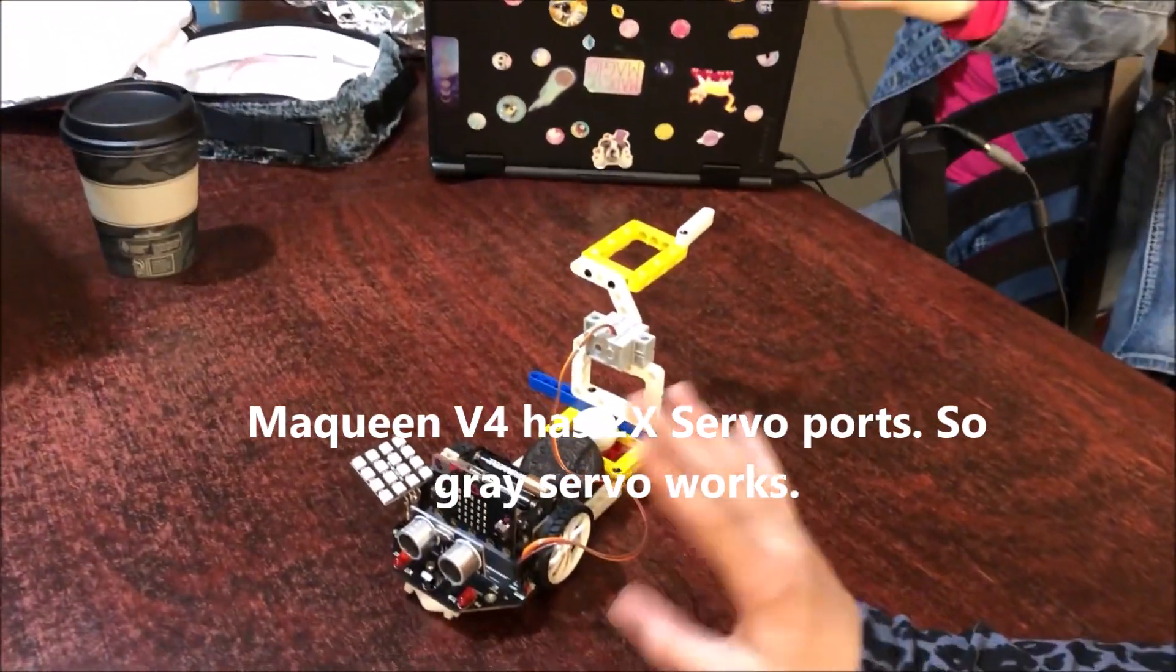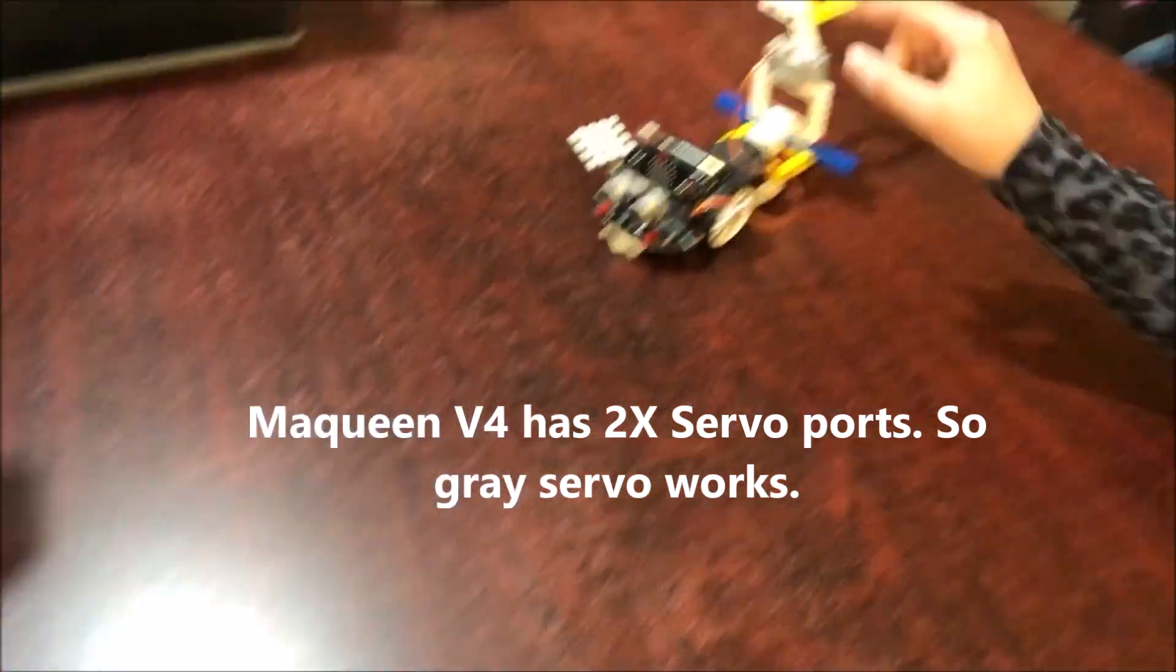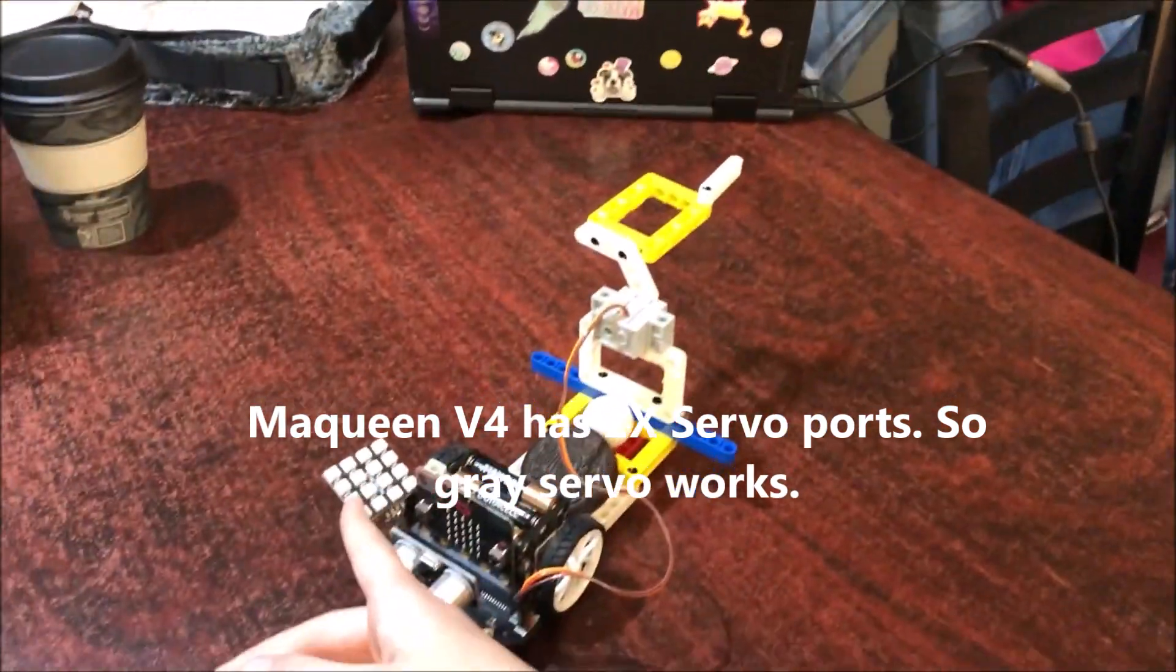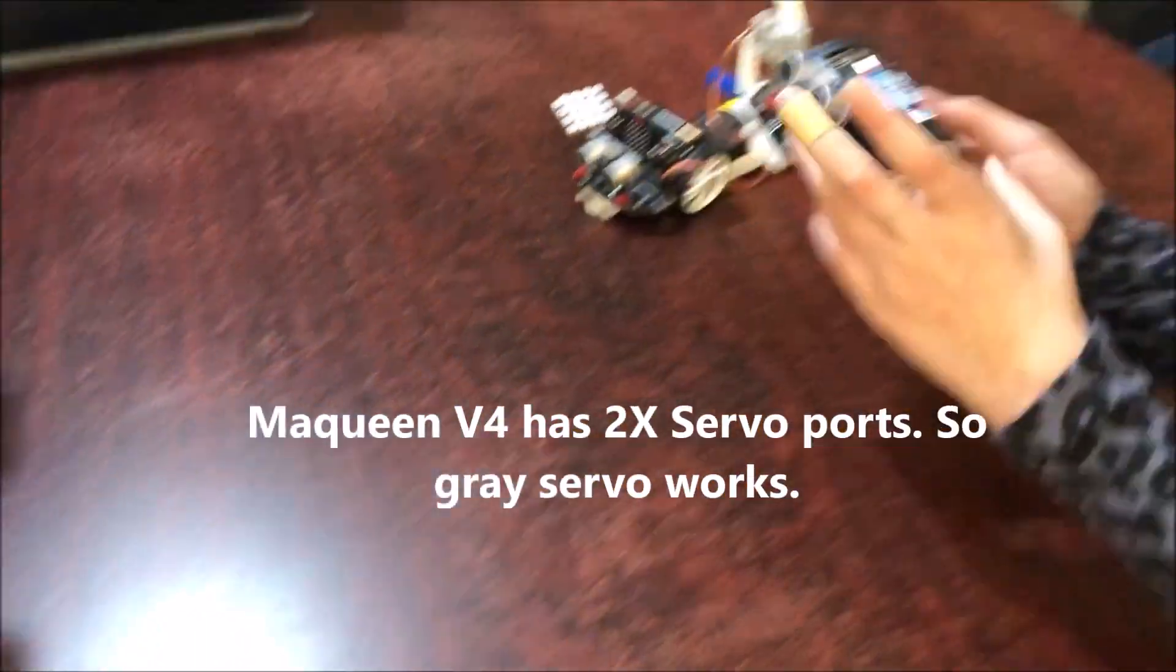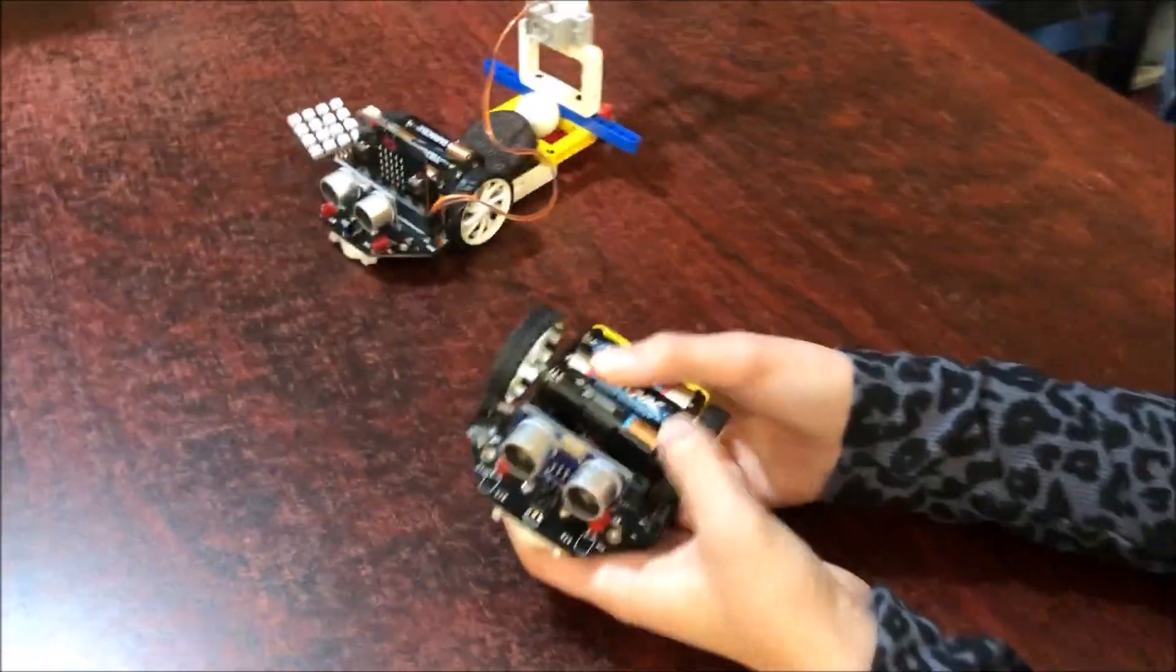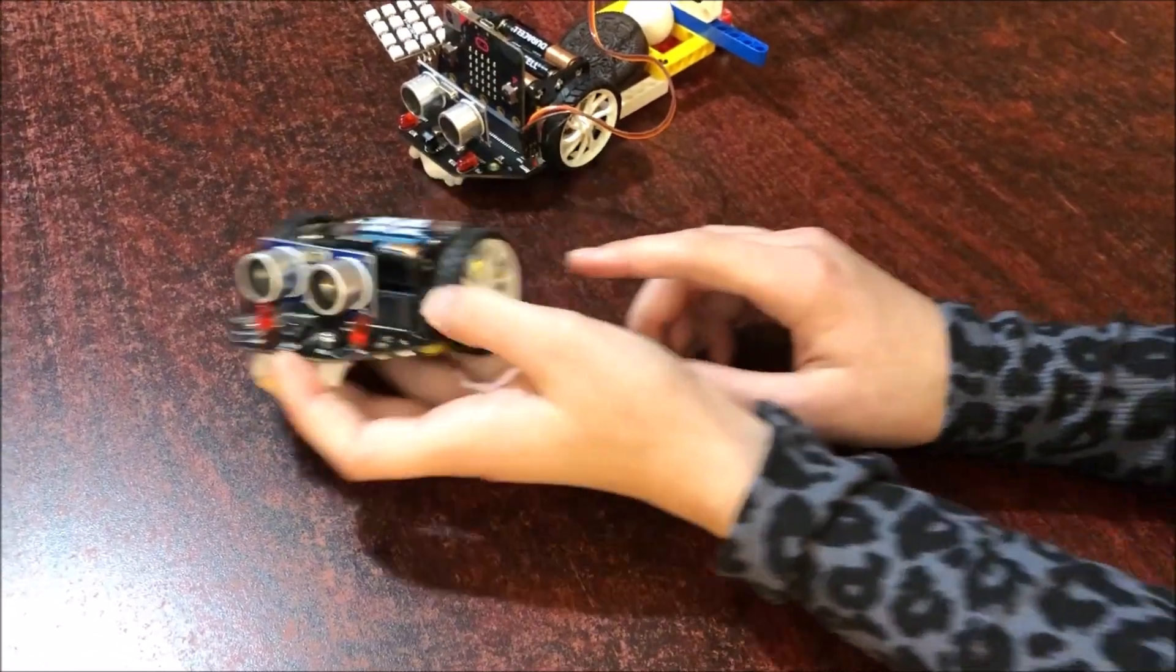This is the micro mq3 version 4 that can operate with the gray motor, lights, and the sensors. But unlike the micro mq3 version 3, it cannot operate with the gray motor.